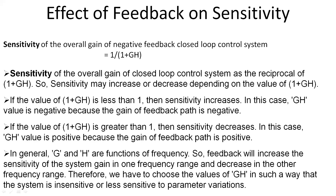Coming to sensitivity — sensitivity is the change in output by change in input. For a control system, the overall gain of a negative feedback control system is G / (1 + GH), and sensitivity is the reciprocal of 1 + GH. The sensitivity may increase or decrease because it is inversely proportional to 1 + GH. If 1 + GH is less than 1, sensitivity increases; if greater than 1, sensitivity decreases. We must choose values of GH such that the system is less sensitive to parameter variations in G and H.